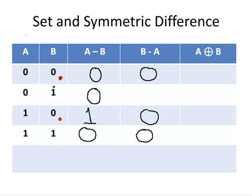This second row indicates that the element is a member of B but not a member of A. So that will be part of the set difference of B minus A.